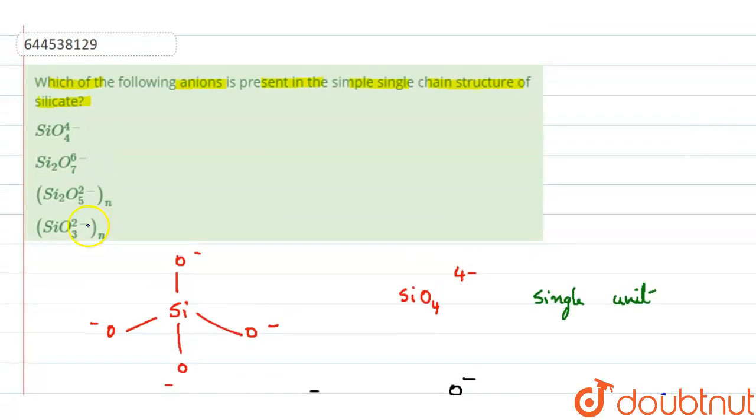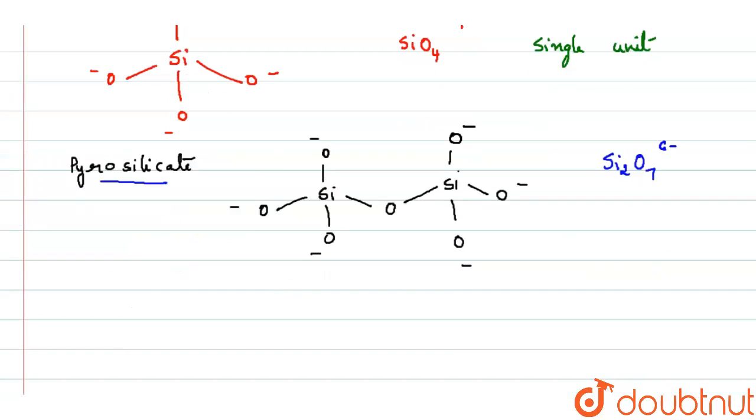The next structure, if you see, Si2O5^2- n. The third structure what we are going to write, it is a sheet silicate. So Si2O5 and then n unit 2 minus, this is a sheet silicate.